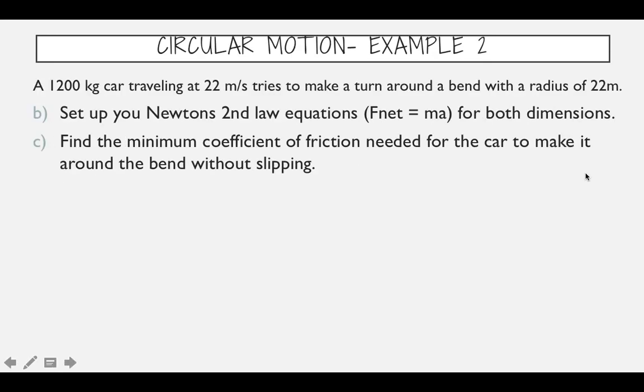So part B, we are going to set up Newton's second law equations, F net equals MA, for both dimensions, meaning the X and Y direction. The car is only accelerating in the X direction. So our sum of our forces in the X direction was force of friction equals mass times acceleration, and it's a centripetal acceleration. Our other equation, some of the forces in the Y direction are going to be equal to MA, but we don't have an acceleration in the Y direction, so it's going to equal zero. And those two forces are F normal is up and force of gravity is down. So that's our setup.